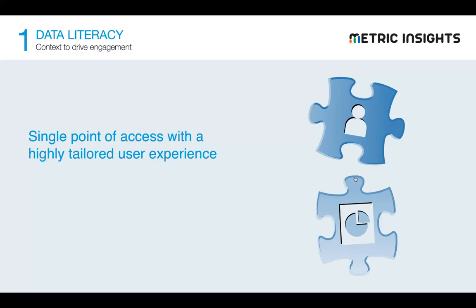Data literacy, as a first step, is all about providing single access points to all the information that you have, and then providing users with a tailored user experience. By definition, you cannot have data literacy in your organization if your users experience that jungle — if you're throwing every analytic and reporting tool at them in a disorganized fashion, with different access points and different places to search. Unified access and a highly tailored user experience aligned to the user's persona is absolutely critical to establishing data literacy.